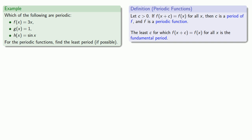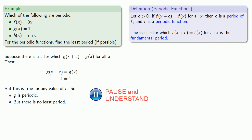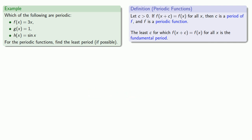What about g(x) = 1? Suppose there is a c for which g(x + c) = g(x) for all x. Then 1 = 1, and this is true for c = 2πn.